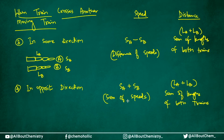So those are the four conditions you will encounter: a train crossing a stationary object without width, a train crossing a stationary object with width, two trains moving in the same direction, and two trains moving in opposite directions. These cover the speed and distance considerations for all types of train questions.